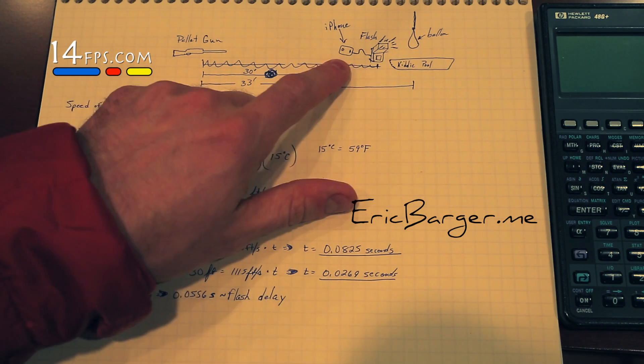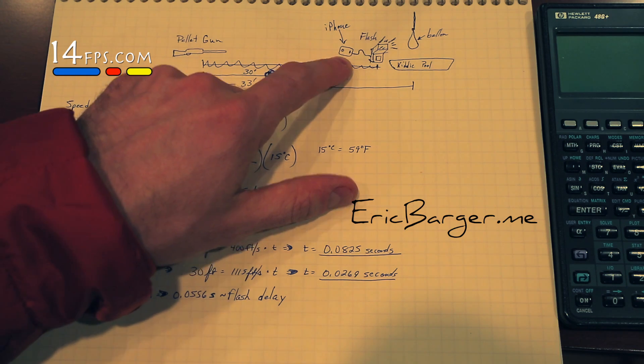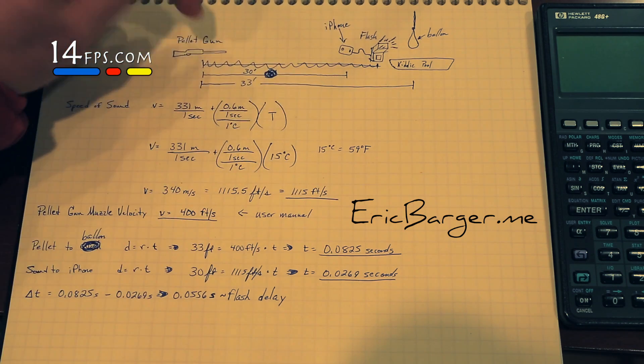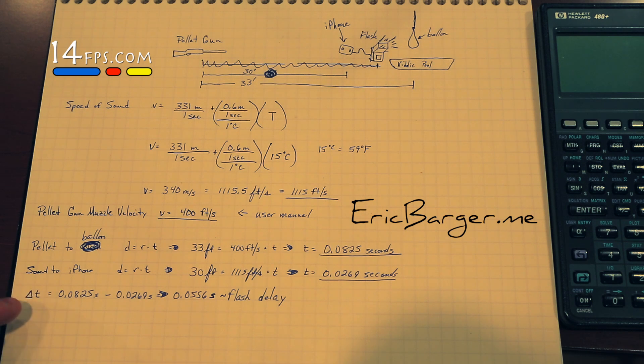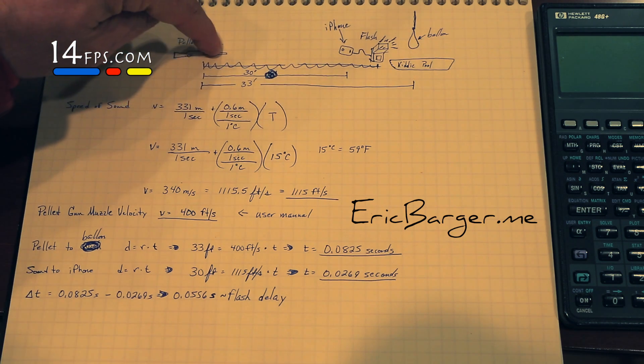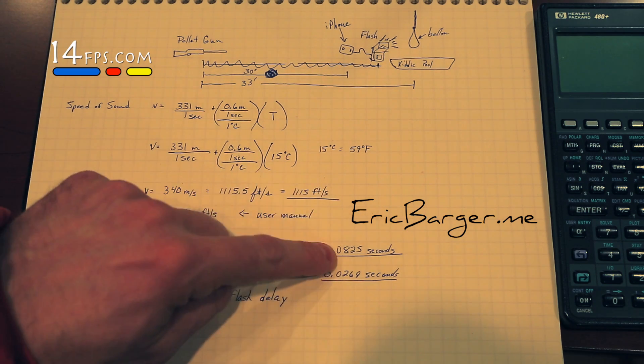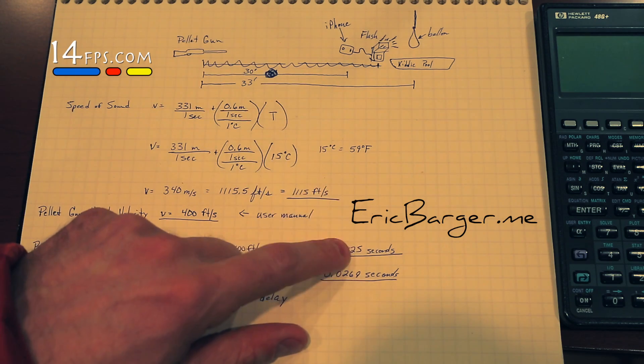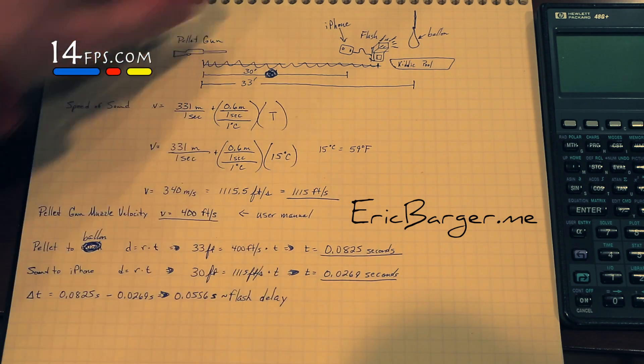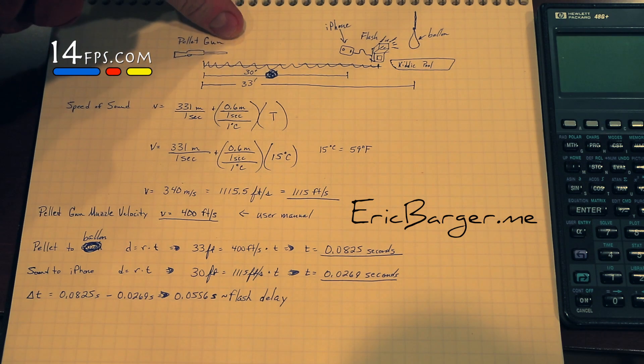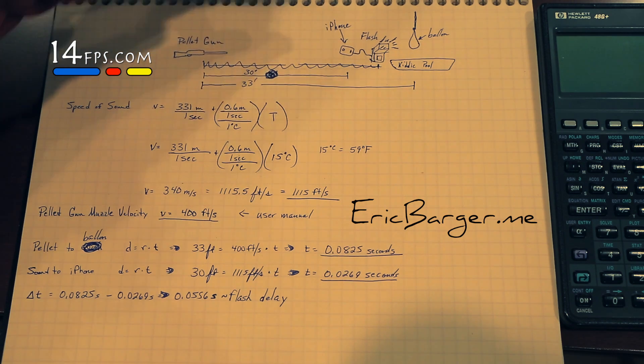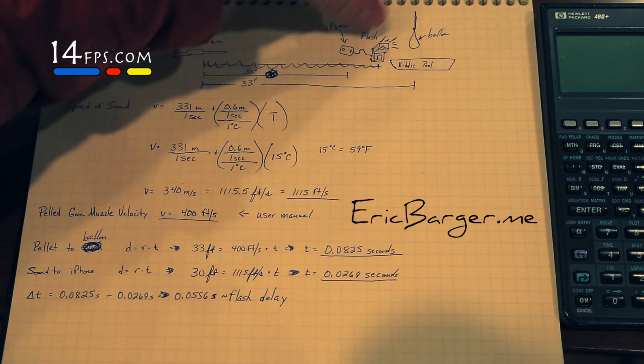Alternatively, what I could have done is the 560TX transmitter and iPhone could have went next to the pellet gun. That would have removed the need to calculate the speed of sound. Because then the sound would have happened at the gun, so it would have been negligible. Then we would have only had to calculate how long does it take the pellet to travel to the balloon and that would have become our flash delay. And that is how I would do it again. I would have put the transmitter and iPhone next to the pellet gun instead of near the flashes and the balloon.